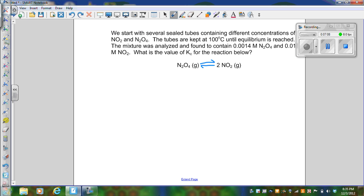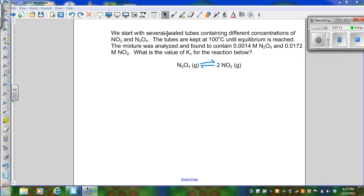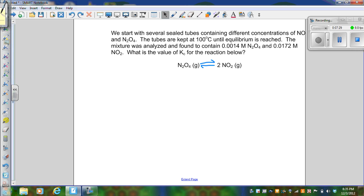Let's look at another example. Here we've got several sealed tubes containing different concentrations of nitrogen dioxide and dinitrogen tetroxide. Tubes are kept at 100°C until equilibrium is reached. The mixture was analyzed and found to contain 0.0014 M N2O4 and 0.0172 M NO2. They want to know what is the value of Kc for the reaction below.